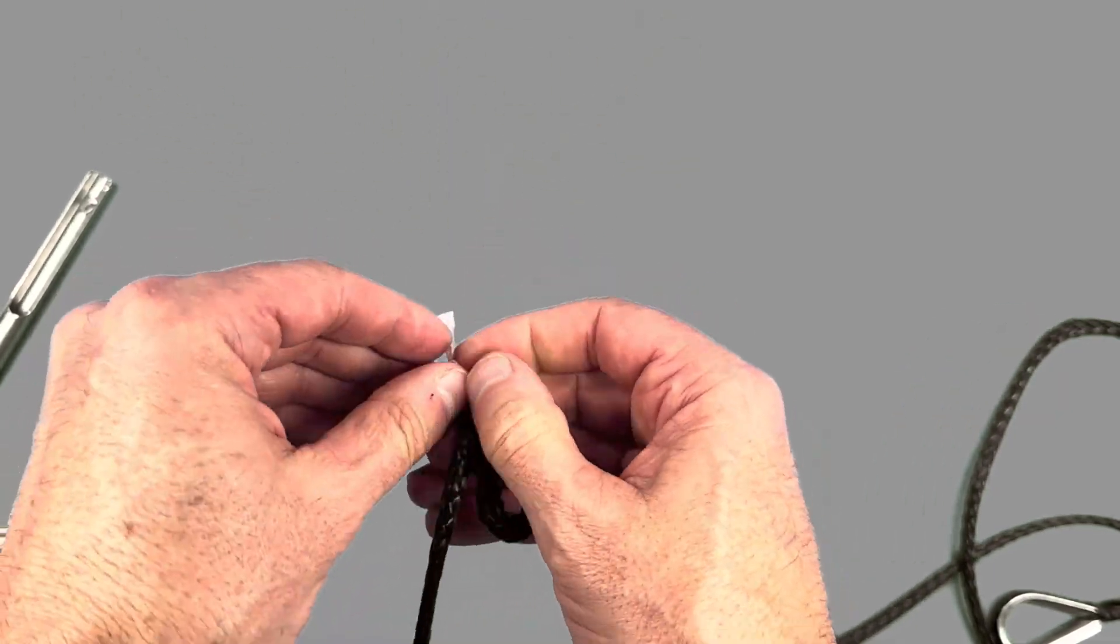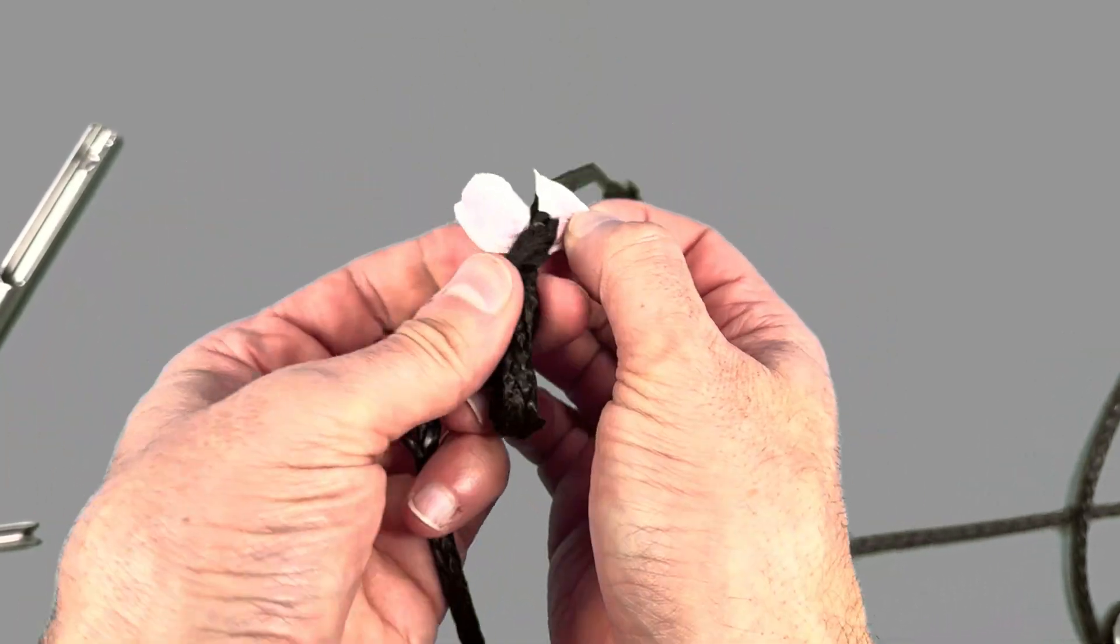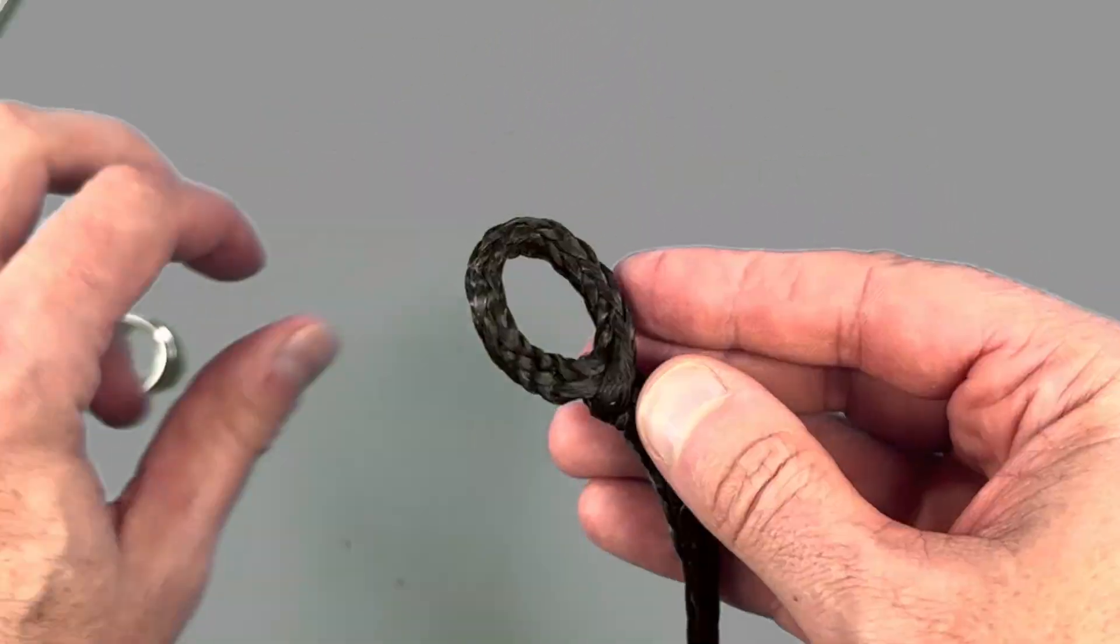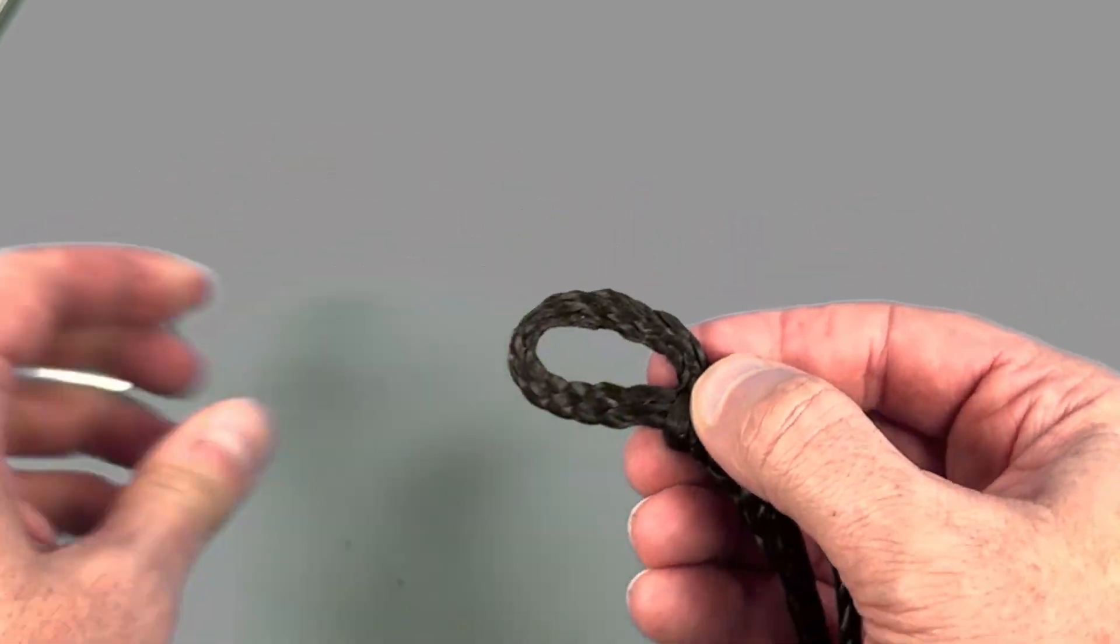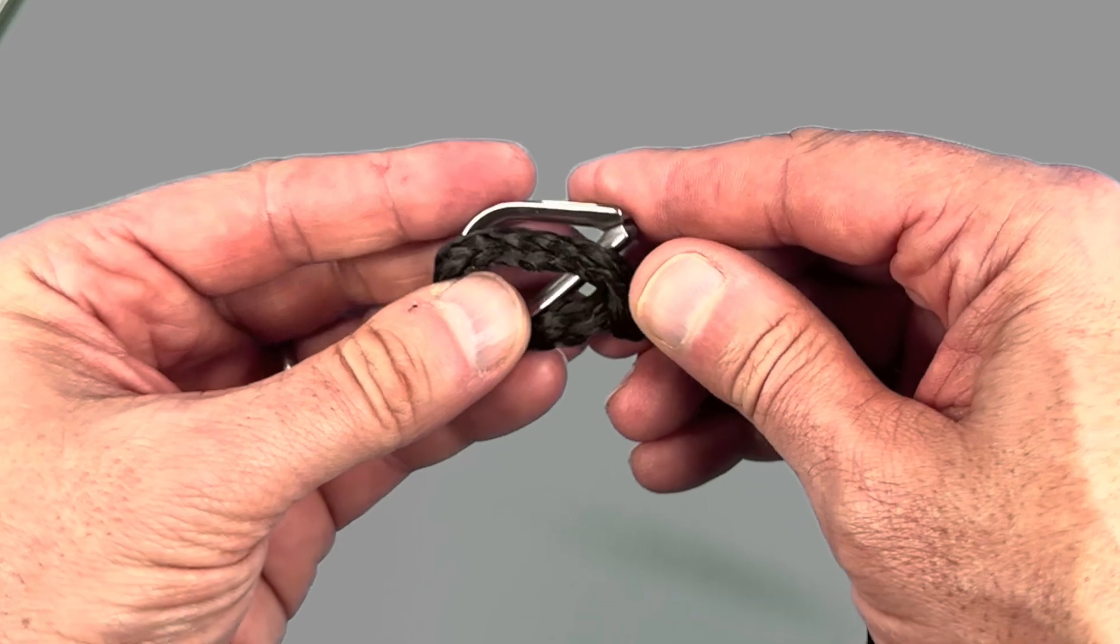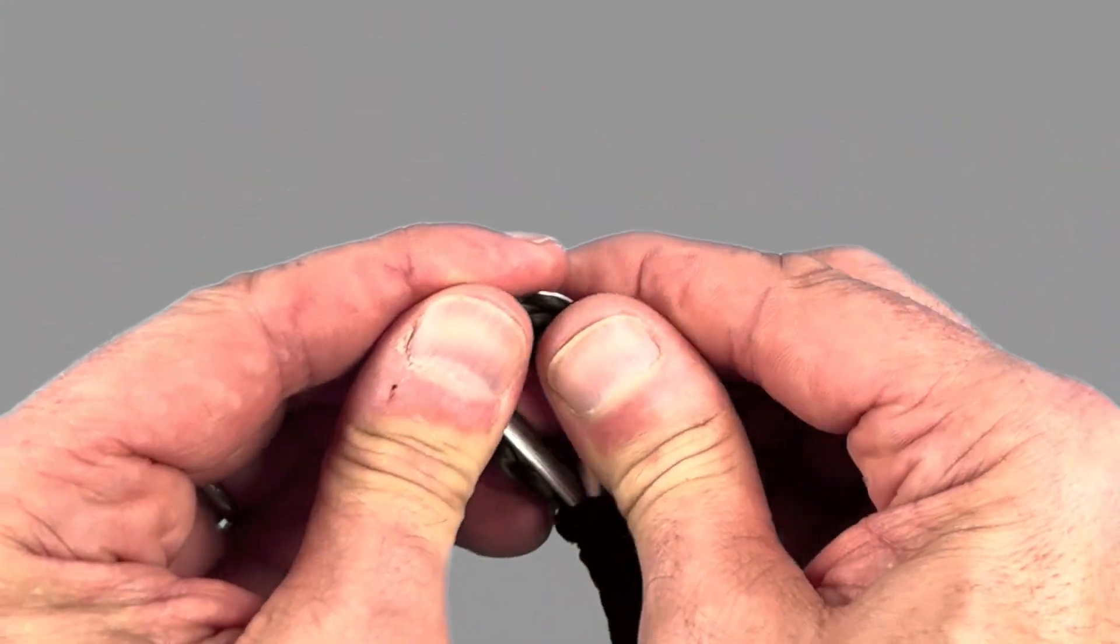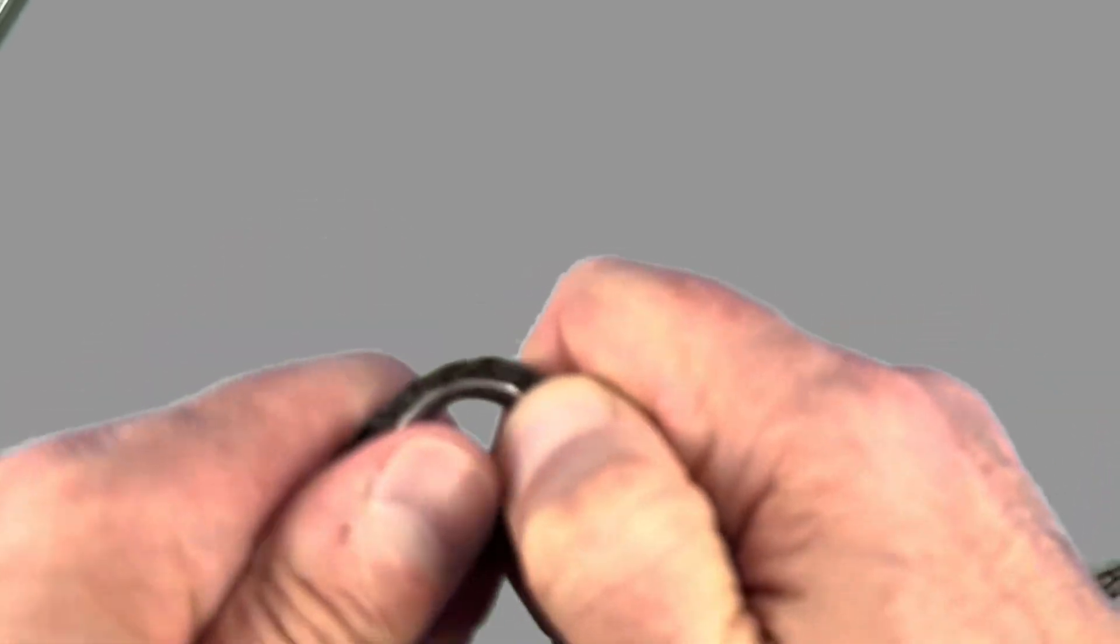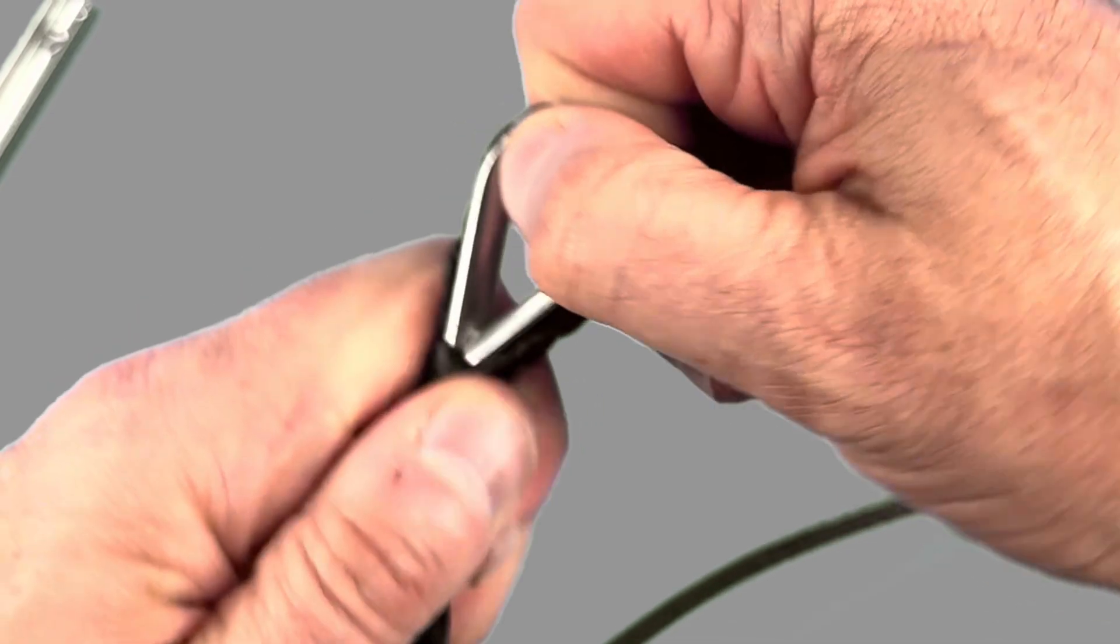Now all we need to do is remove the tape and then widen out the eye of your Brummel locked splice to enable the thimble to slot in. It's best to start at the bottom of the thimble and then just slowly tease it up to the top, pivoting it over and locking it into place.